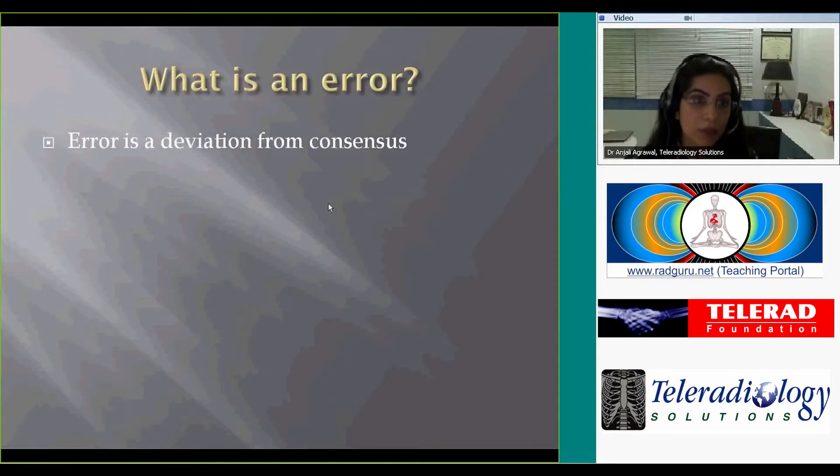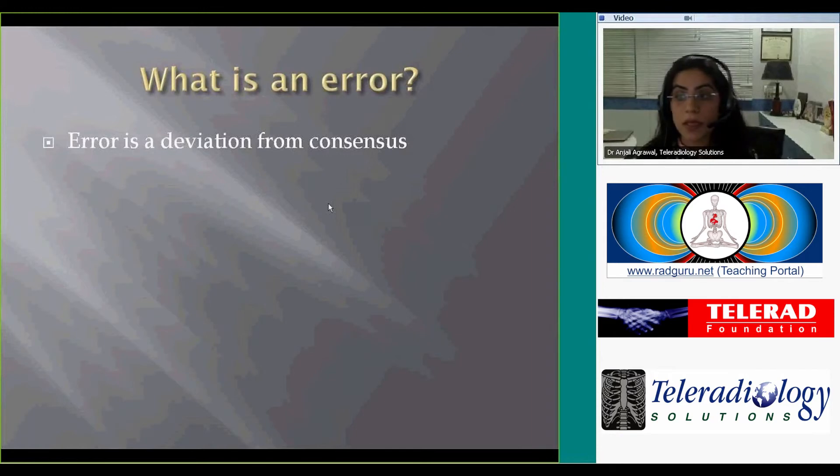I just wanted to clarify the term error and discrepancy. It's felt by some people that perhaps discrepancy is the right term to use because to say that it's an error, one needs to be sure that the correct interpretation is undisputed. Whereas discrepancy is a difference of opinion between two people or a radiologist and a team of experts.